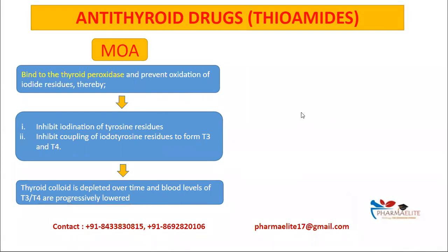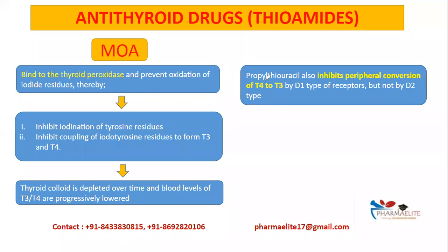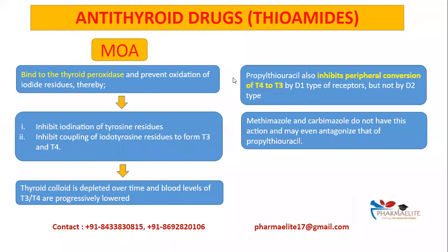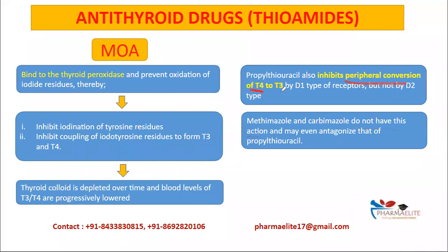An additional and very important action of propylthiouracil is that it inhibits the peripheral conversion of T4 to T3, acting on D1-type receptors. The other two drugs from this class — carbamazole and methimazole — do not have this action, and may even antagonize it. That is why their combination with propylthiouracil needs to be avoided.